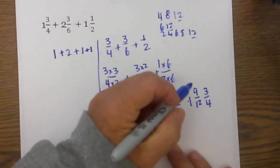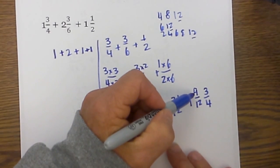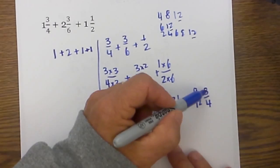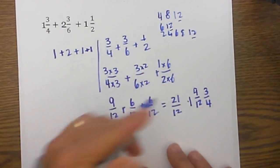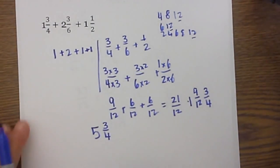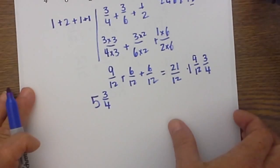Let me go back to this nine twelfths. The way I reduce that is, three will go into nine three times, and three will go into twelve four times, so that is how I reduced it. That would be the first technique.